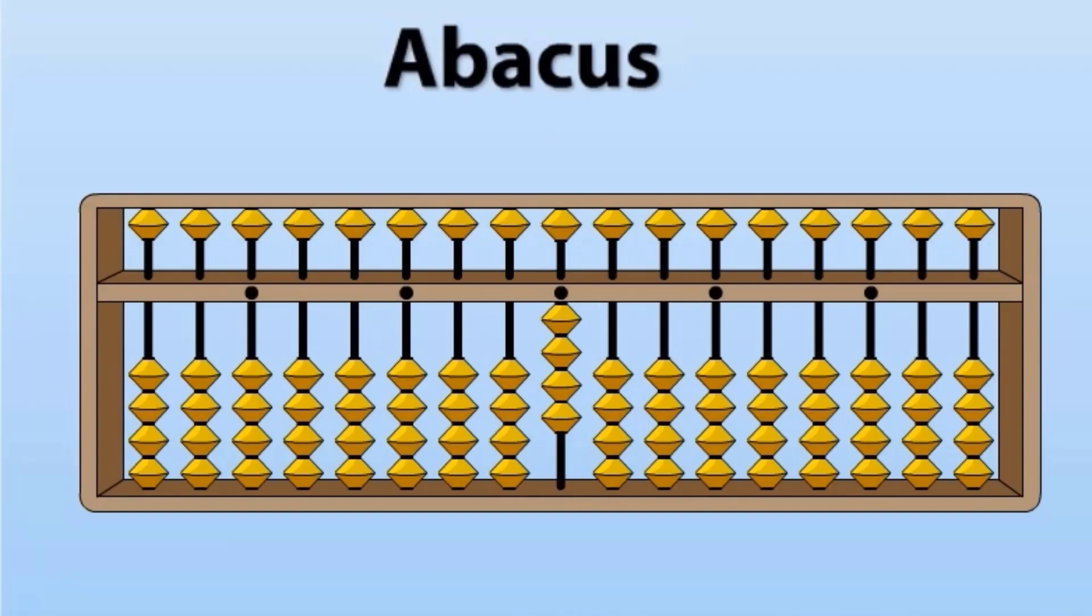For adding and subtracting, if we want to add any number, we will take that number towards value bar. And if we want to subtract, we will take away that number from value bar.